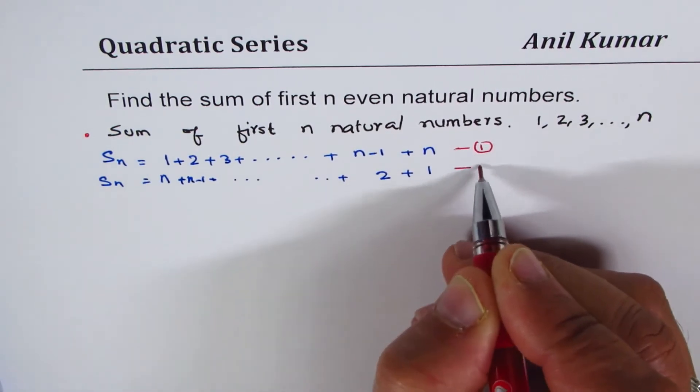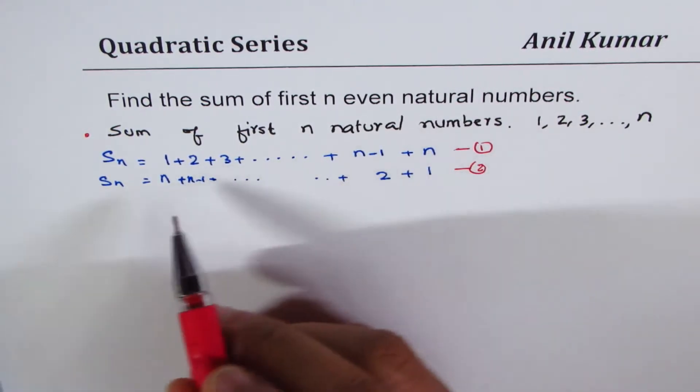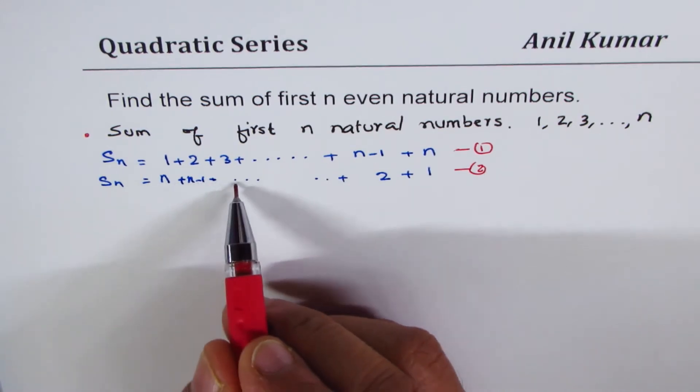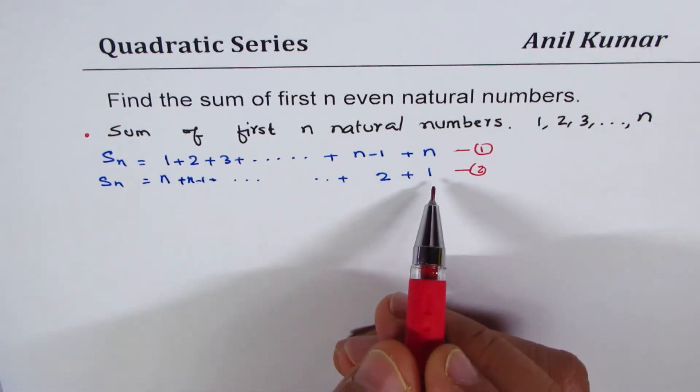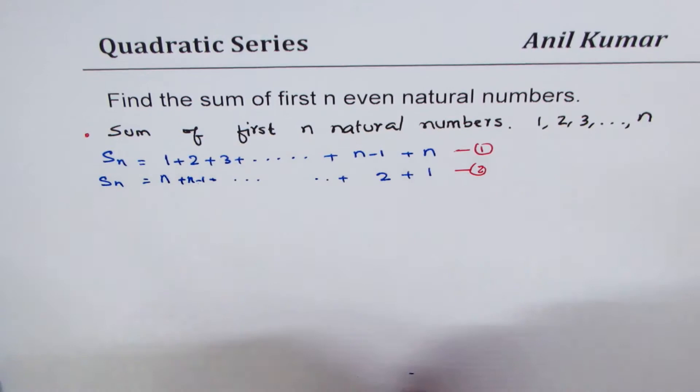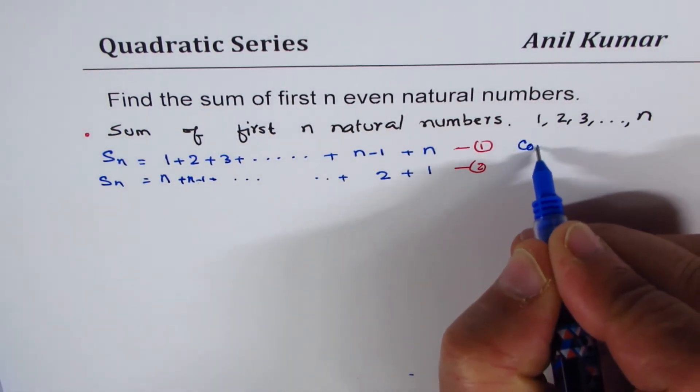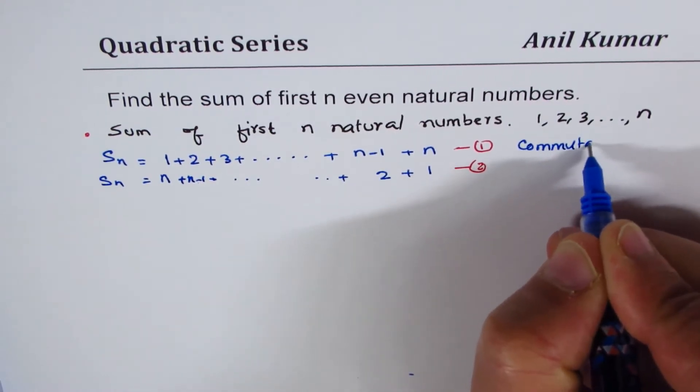First, going forward, one to n. The other backwards, n, n minus one, n minus two, n minus three, and so on. Both their sums will be same, correct? Commutative law of addition. So, we say from commutative law.